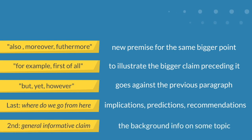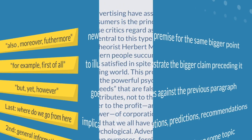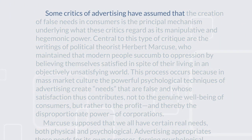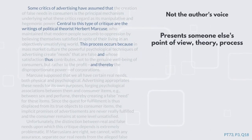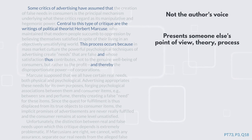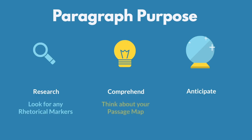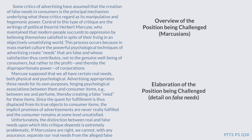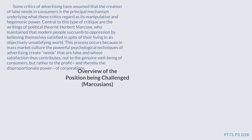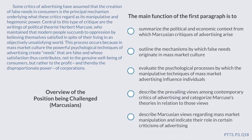We're looking for rhetorical signposts. We see that there's an attribution and then another attribution to Marcuse and then kind of just a causal claim. What's noteworthy is there isn't any author stuff — we're just presenting someone else's point of view. Let's think about how this relates to our passage map overall. The first paragraph gave us an overview of the Marcuse point of view. The second paragraph dug into the false needs. And then the third paragraph, the author starts to challenge it. So let's find an answer that aligns with: overview of the position the author's challenging.